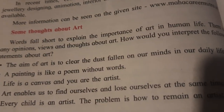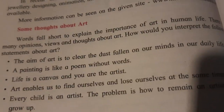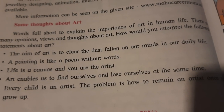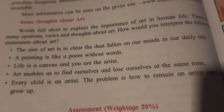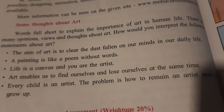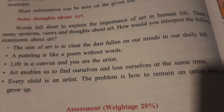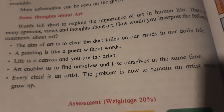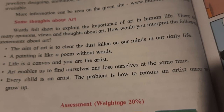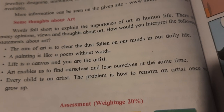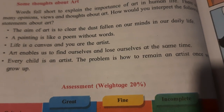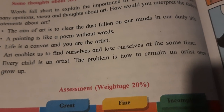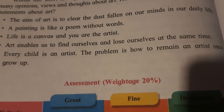Some thoughts about art: words fall short to explain the importance of art in human life. There are many opinions, views, and thoughts about art. How would you interpret the following statements? 'The aim of art is to clear the dust fallen on our minds in our daily life.' Because of daily life, we just start following one particular path. 'A painting is like a poem without words.' 'Life is a canvas and you are the artist — so you write what you want to see in the future.' 'Art enables us to find ourselves and lose ourselves at the same time.' 'Every child is an artist' — because when we are small, we keep drawing on the wall, we draw with our legs. Every child is an artist; the problem is how to remain an artist once we grow up.